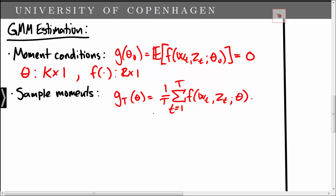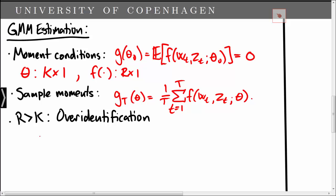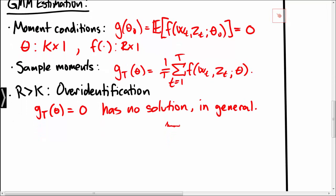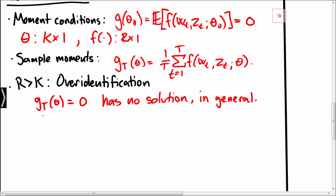However, we consider the situation where r is greater than k, meaning that we have more moments than model parameters to estimate. We denote this case over-identification. In this case the equation gt equal to zero has no solution in general, so instead of setting gt equal to zero we seek to minimize the distance between gt and zero.